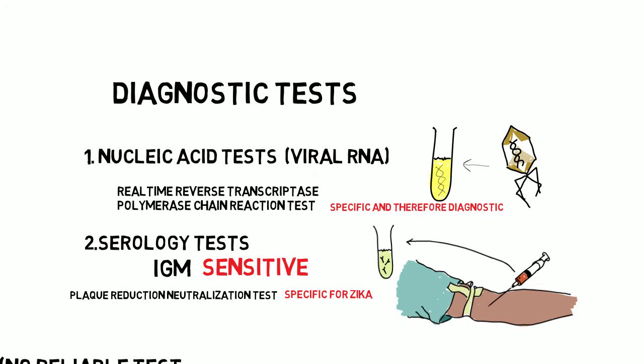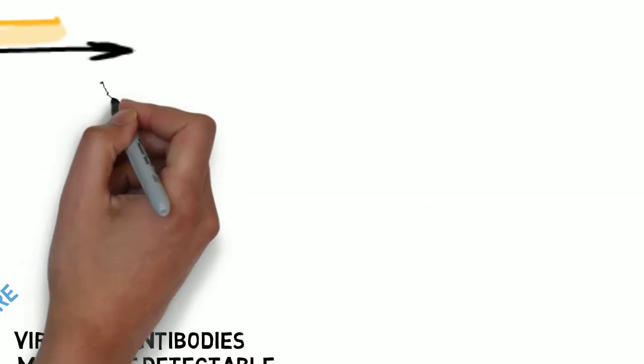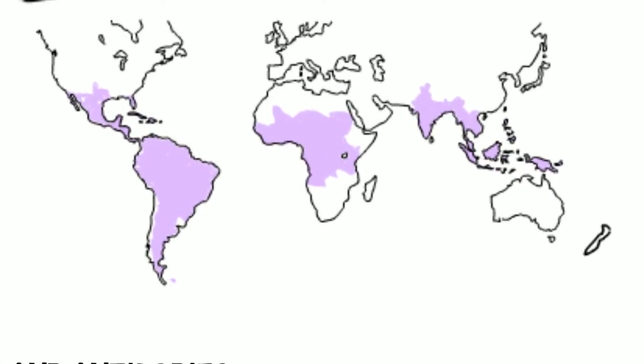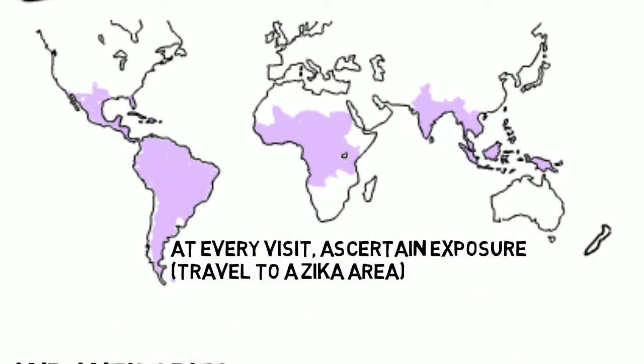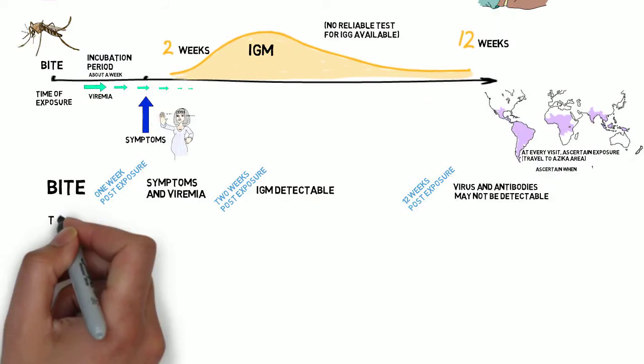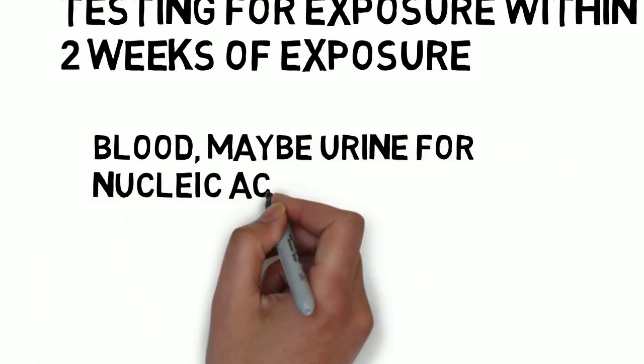First, we'll talk about asymptomatic pregnant patients and then symptomatic ones. The asymptomatic patient is one who either comes to you asking about a possible exposure, or one from whom you elicit that history, because you know to ask if they traveled out of the country or to Florida or Texas at every prenatal visit. If they traveled to a known Zika area, or had sex with someone who did and didn't use a condom, that is a possible Zika exposure. Try to ascertain the timing of exposure. If the exposure was less than two weeks ago, call the Delaware Department of Public Health or their corresponding organization in your locale. They will likely arrange for blood and urine specimens to be collected to test with nucleic acid tests.